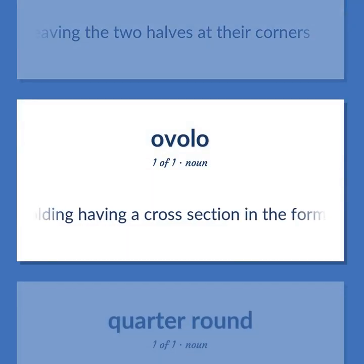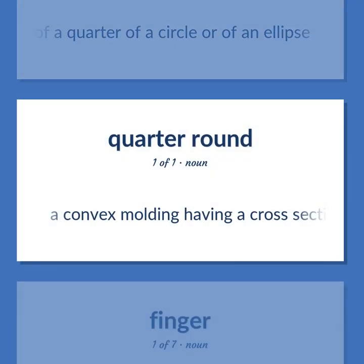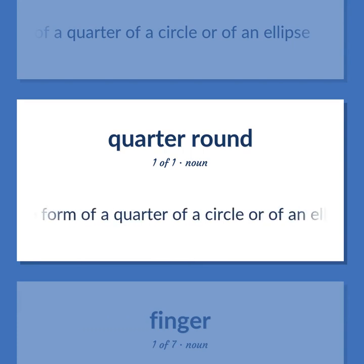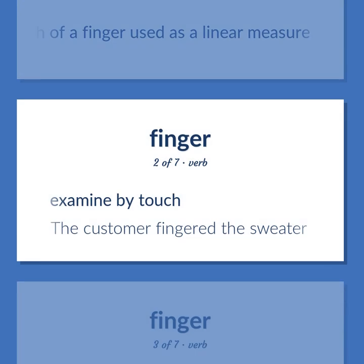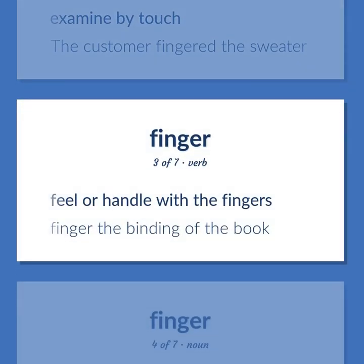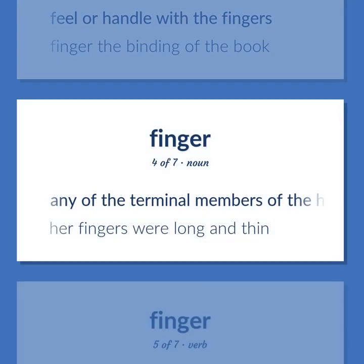Ovolo: A convex molding having a cross section in the form of a quarter of a circle or of an ellipse. Finger: The length or breadth of a finger used as a linear measure. Examine by touch — the customer fingered the sweater. Feel or handle with the fingers — finger the binding of the book. Any of the terminal members of the hand, sometimes excepting the thumb.